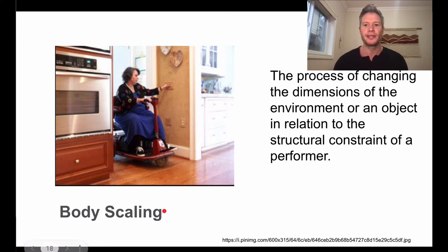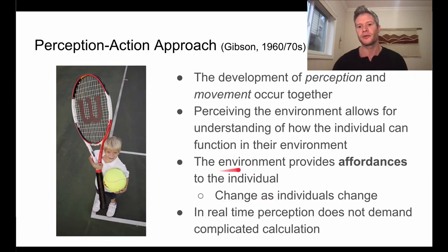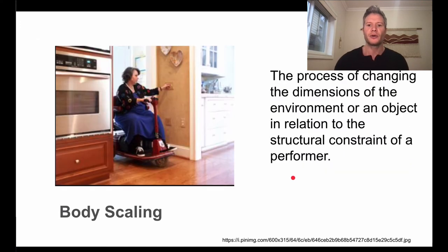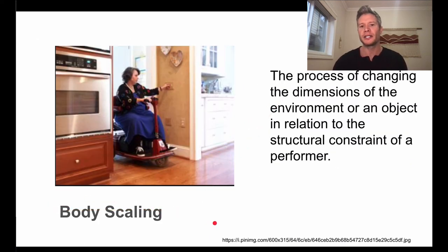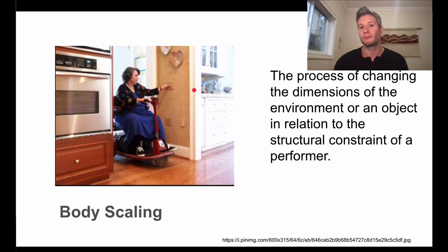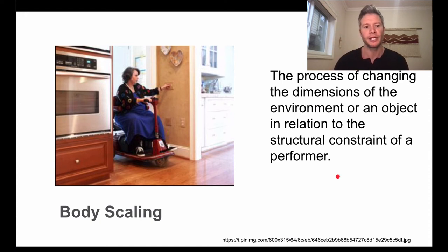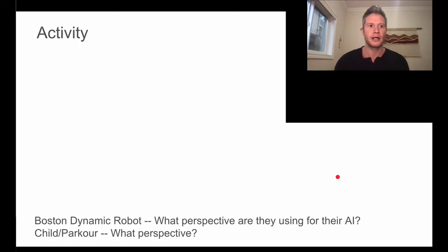The environment affords us the ability to do things. For example, a child with a giant tennis racket and ball won't be able to use it well — it doesn't afford the child the capacity to play tennis. We can do something called body scaling — changing the scale or environment to allow people to perform certain activities. One example is lowering a light switch for someone in a wheelchair, since standard switches may be too high. The environment is scaled to allow the performer to do it.